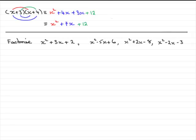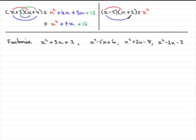Let me do one more expansion to illustrate this further. Suppose we had different signs: x minus 5 multiplied by x plus 2. Again, x times x is x squared, x times plus 2 gives plus 2x, minus 5 times x gives minus 5x, and minus 5 times plus 2 gives minus 10. Simplifying: x squared, and 2x minus 5x is minus 3x, with the constant minus 10.